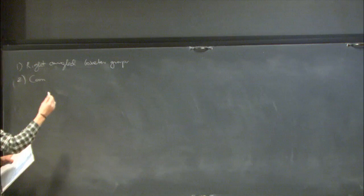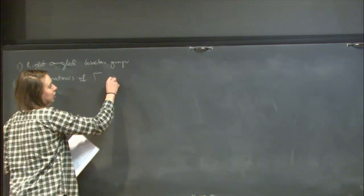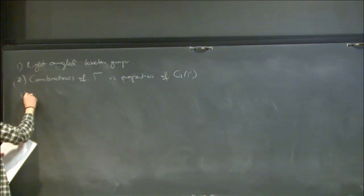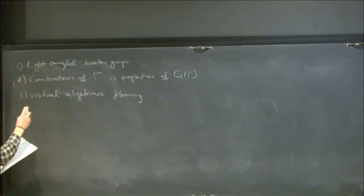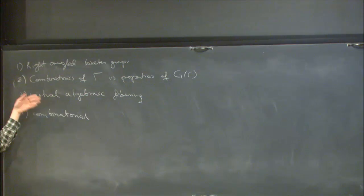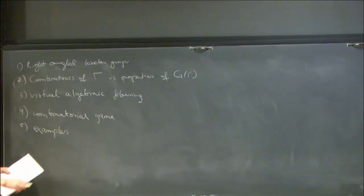The right-angled Coxeter groups will be defined by a graph, so there is combinatorics of a graph gamma and corresponding properties of the group defined by gamma. Then I'll talk about virtual algebraic fibering, which is in the title of my talk, and a combinatorial problem that corresponds to this property. In the end, I'll show some important examples.